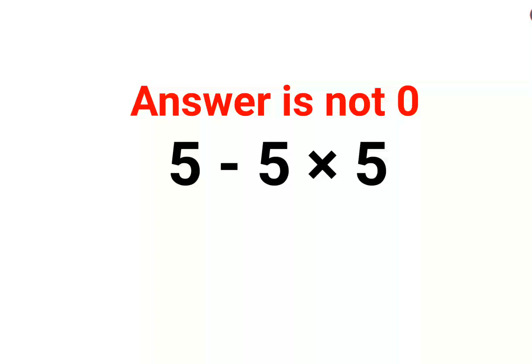Welcome everyone! So yes, a lot of people thought that the answer for this one is 0 because they thought 5 minus 5 is 0 and then anything multiplied by 5, 0 multiplied by anything is always 0.